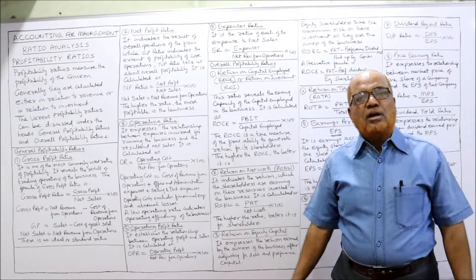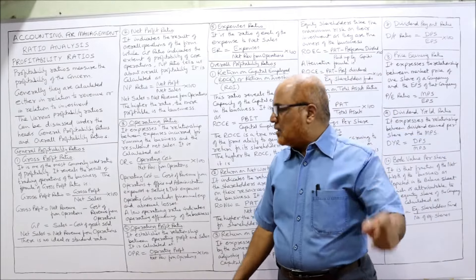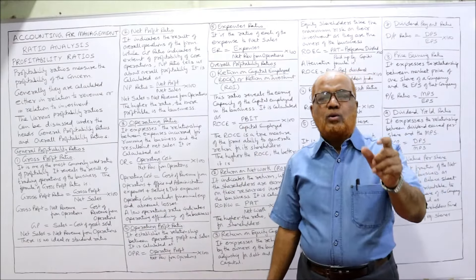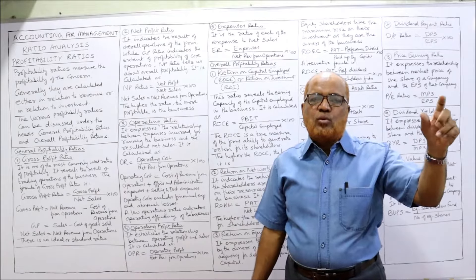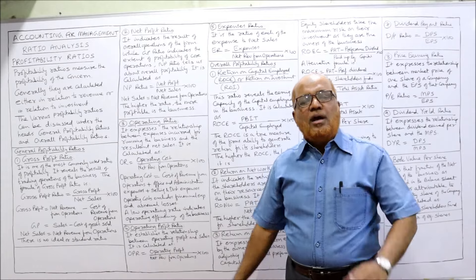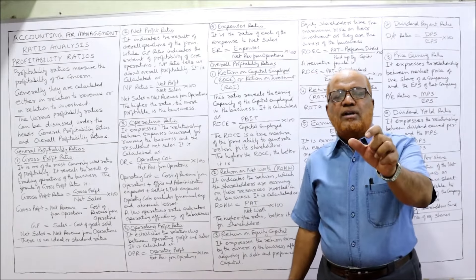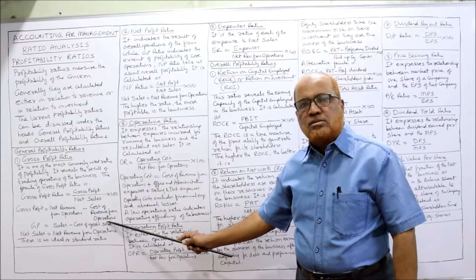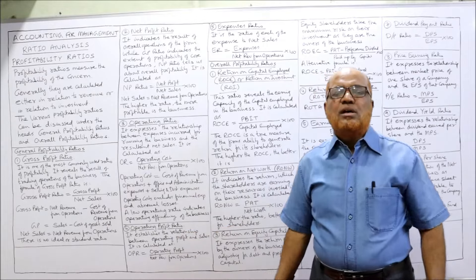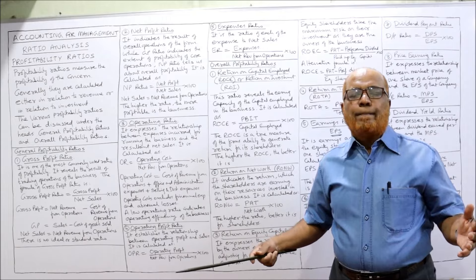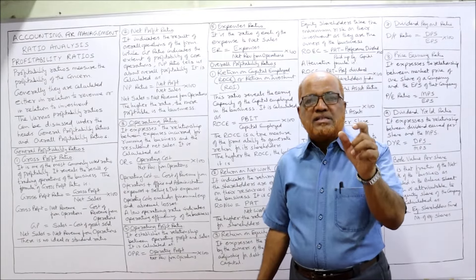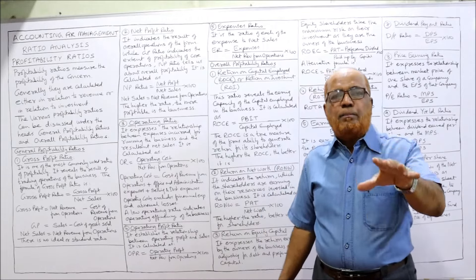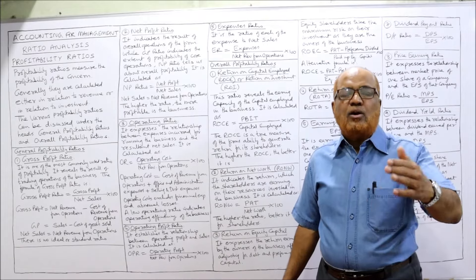Gross profit equals sales minus cost of goods sold according to old terminology. According to new terminology, gross profit equals revenue from operations minus cost of revenue from operations. There is no ideal or standard ratio for gross profit ratio — every business will have a different gross profit ratio depending on the performance of its trading operations.